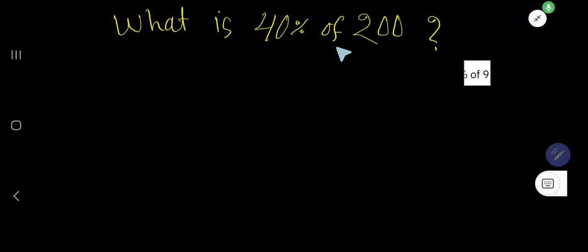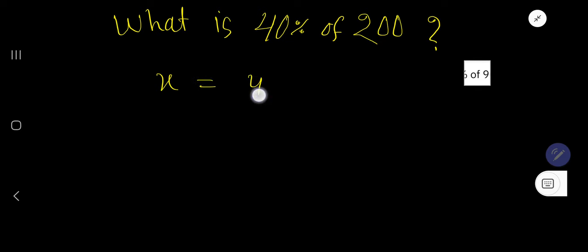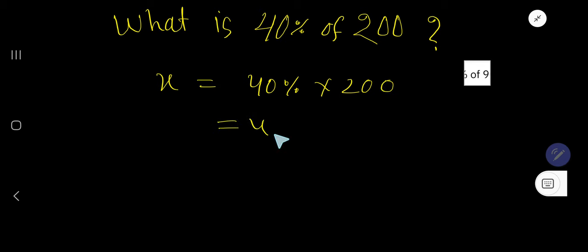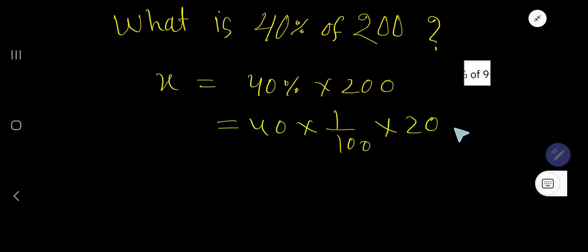What is 40% of 200? Let me translate it: 'what' means X, 'is' means equal sign, '40%' means 40 times 1 over 100, and 'of' means multiplication sign, times 200. So we have X = 40 × (1/100) × 200. Now cancel the zeros.